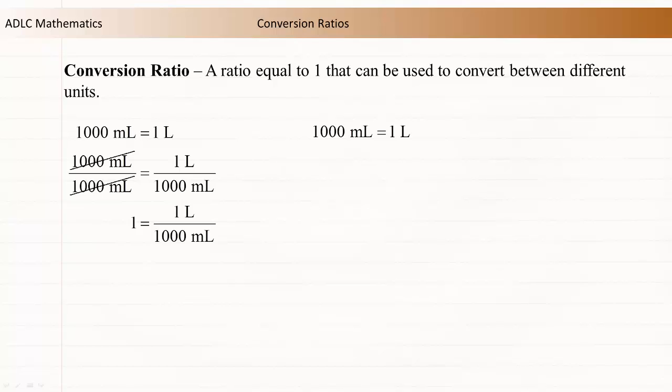We can produce a slightly different ratio by dividing both sides of the original equality by 1 litre. The two 1 litres on the right side of the equation reduce, and we are left with 1000 milliliters divided by 1 litre is equal to 1.